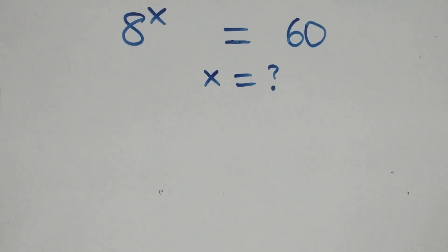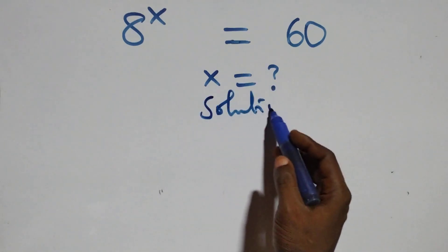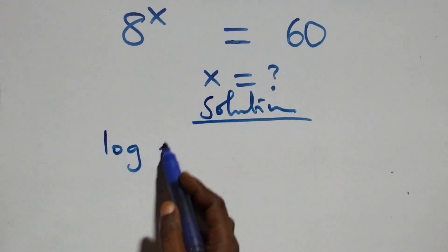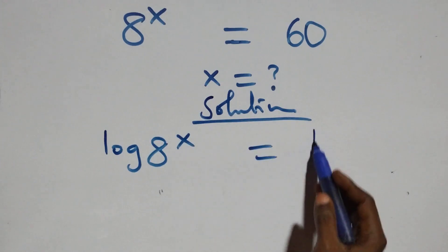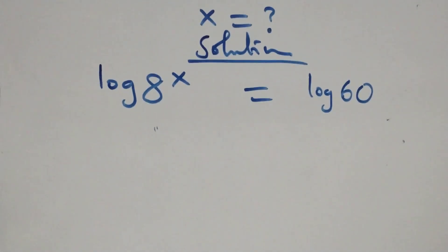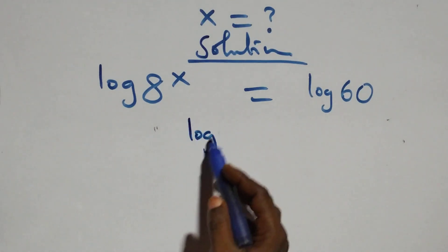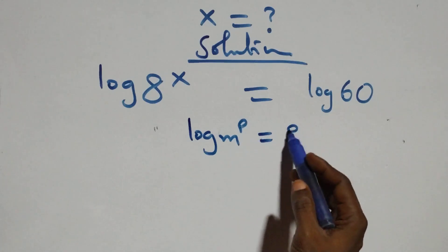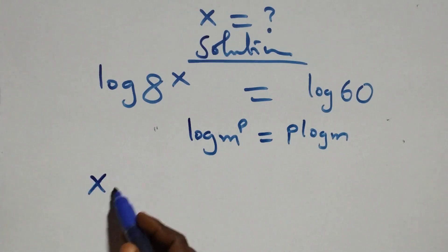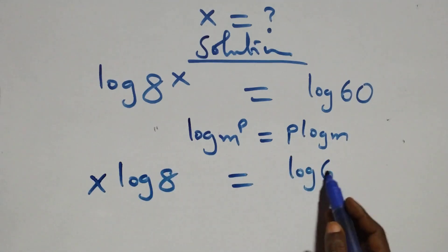Hello, welcome. We solve this exponential equation. We take the log on both sides: log of x raised to power x equals log 60. Next, we apply the power rule of logarithms — when we have log n raised to power p, this is the same as p log n. So we have x log 8 equals log 60.